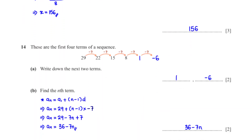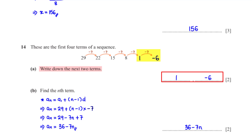These are the first four terms of a sequence. Write down the next two terms. The terms have a common difference of negative 7. To get the next term, we subtract 7 from 8, giving 1. To get the term after that, we subtract 7 from 1, giving negative 6.